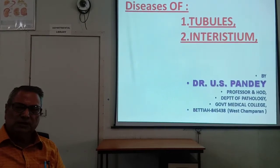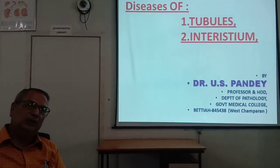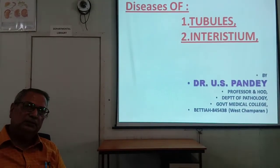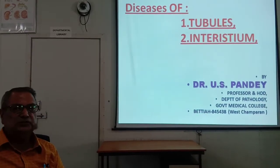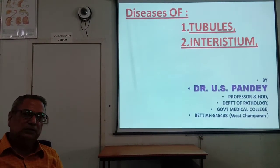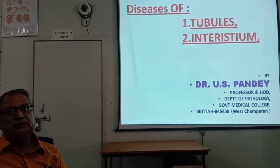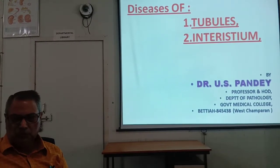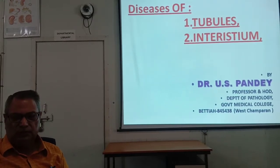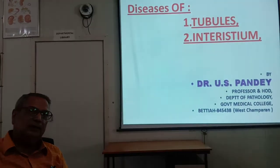Today I will discuss the disease of the tubules. Kidney diseases are described under four headings: disease of the glomerulus, disease of the tubules, disease of the interstitium, and disease of the blood vessels. Having discussed glomerular disease in detail over two classes, today I will discuss disease of the tubules and disease of the interstitium combined. In the tubules, the important disease is acute tubular necrosis.